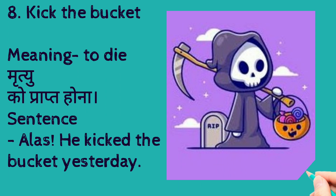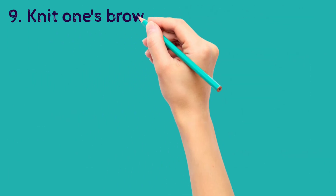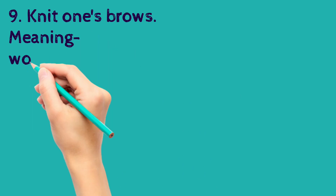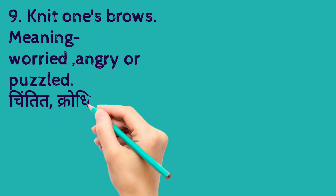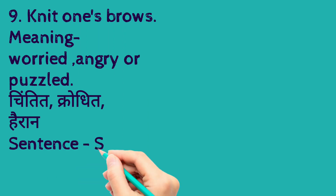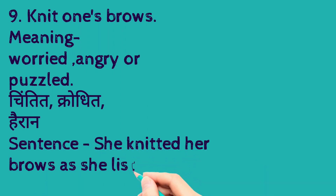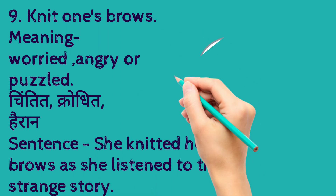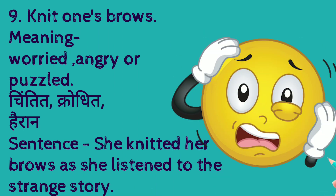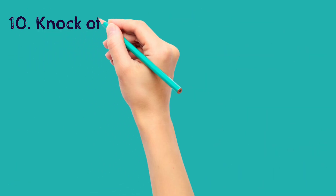The ninth one is 'knit one's brow'. Its meaning is worried, angry, or puzzled. The sentence is: she knitted her brows as she listened to the strange story — she was puzzled.